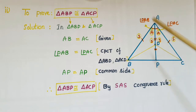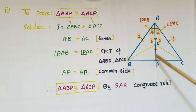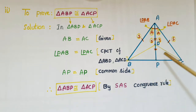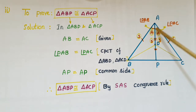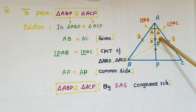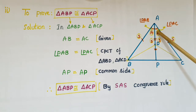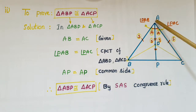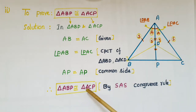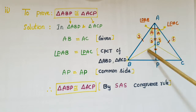Now we have to prove that triangle ABP is congruent to triangle ACP. In triangle ABP and triangle ACP: AB = AC (given, since ABC is an isosceles triangle); angle PAB = angle PAC, because we just proved the two triangles are congruent so their corresponding parts are equal; and AP is the common side. Therefore, triangle ABP is congruent to triangle ACP by SAS congruence rule.